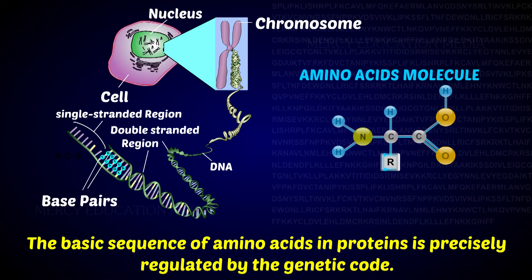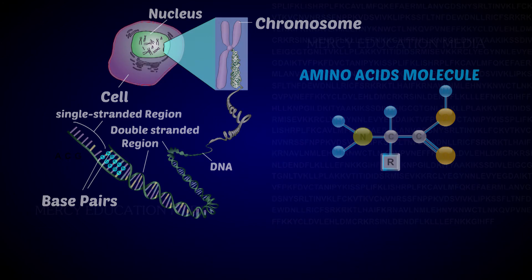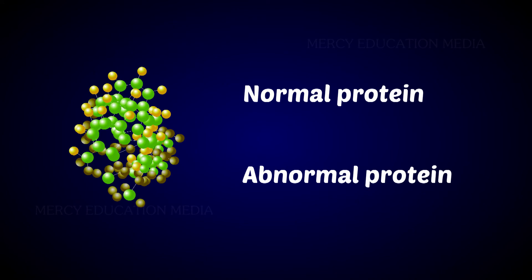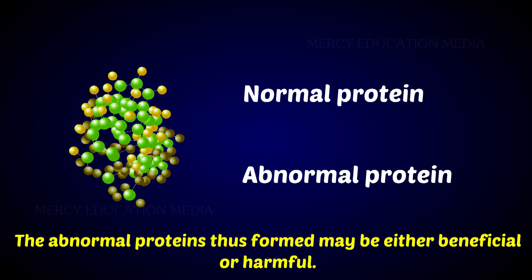The basic sequence of amino acids in proteins is precisely regulated by the genetic code. Any change in the code due to gene mutation will result in the production of abnormal proteins. The abnormal proteins thus formed may be either beneficial or harmful.